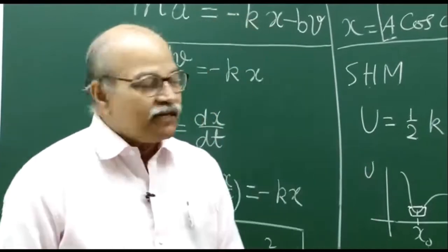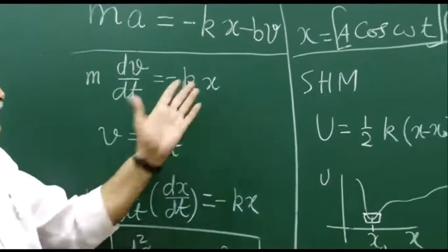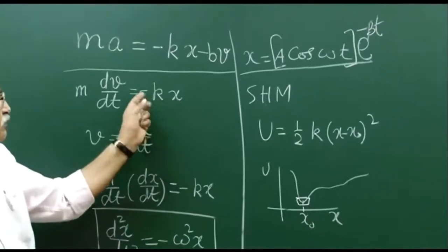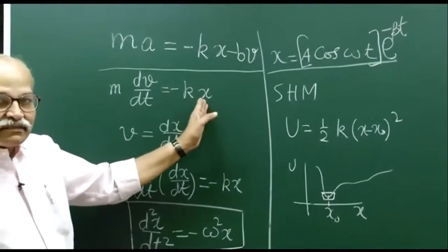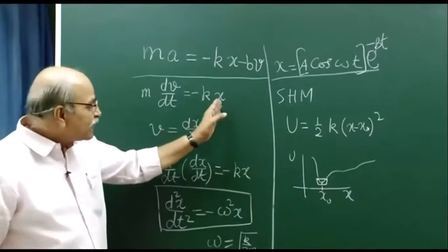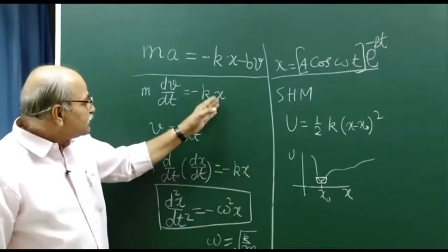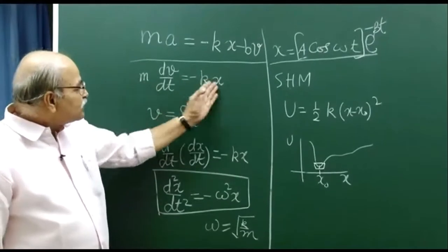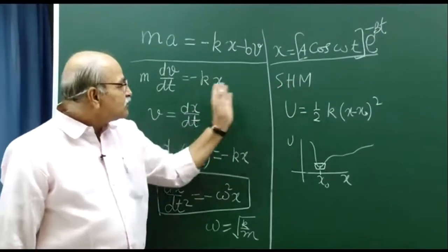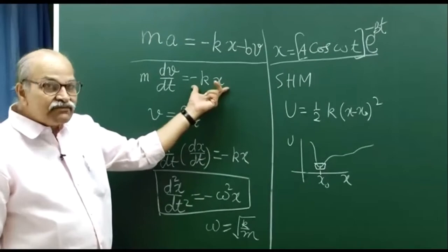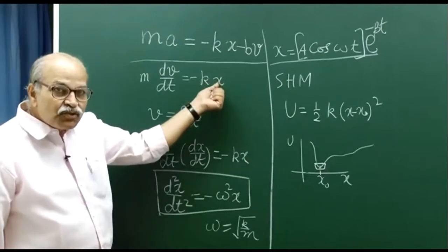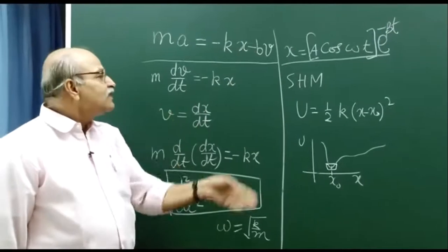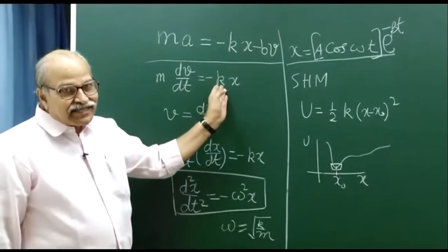In equations, we have this kind of thing: a restoring force which is proportional to the displacement or whatever parameter is involved. This is a special case which we called SHM, simple harmonic motion, in which the restoring force is proportional to x, and for small oscillations around the stable equilibrium, this will always be the case.